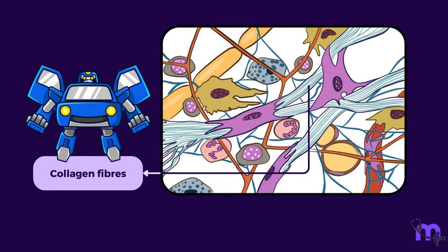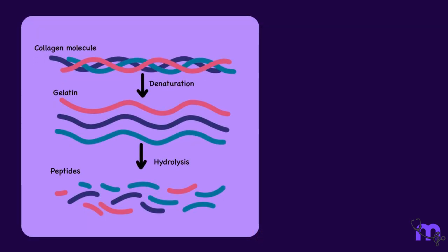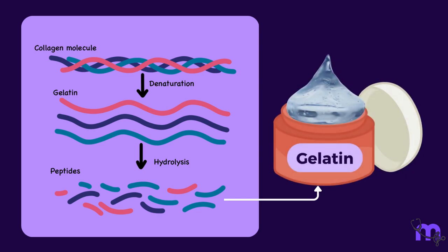Collagen can transform into a whole different substance when heated. When collagen is heated, it undergoes a process called hydrolysis, where it is broken down into smaller fragments known as gelatin peptides. These peptides can then combine to form gelatin, which is a gel-like substance with a wide range of applications.